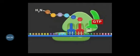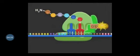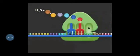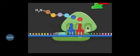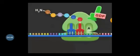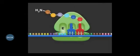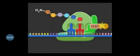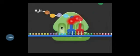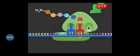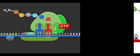After codon-anticodon matching, GTP assists binding of the new tRNA. Then a bond forms between the amino acid at the A site and the amino acid at the P site. The chain shifts: the messenger RNA moves three nucleotides forward, the A site is converted into the P site, the P site is converted into the E site, and the empty tRNA exits through the E site. This cycle repeats during elongation.